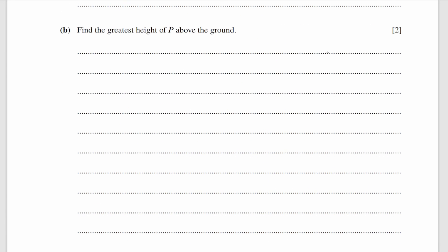Question b is about the greatest height itself. Again I'm going to use the SUVAT equation: s equals ut plus at squared over 2. We already know that u is 30 and t equals 3, so I'll substitute all of that into the equation. I got 45.